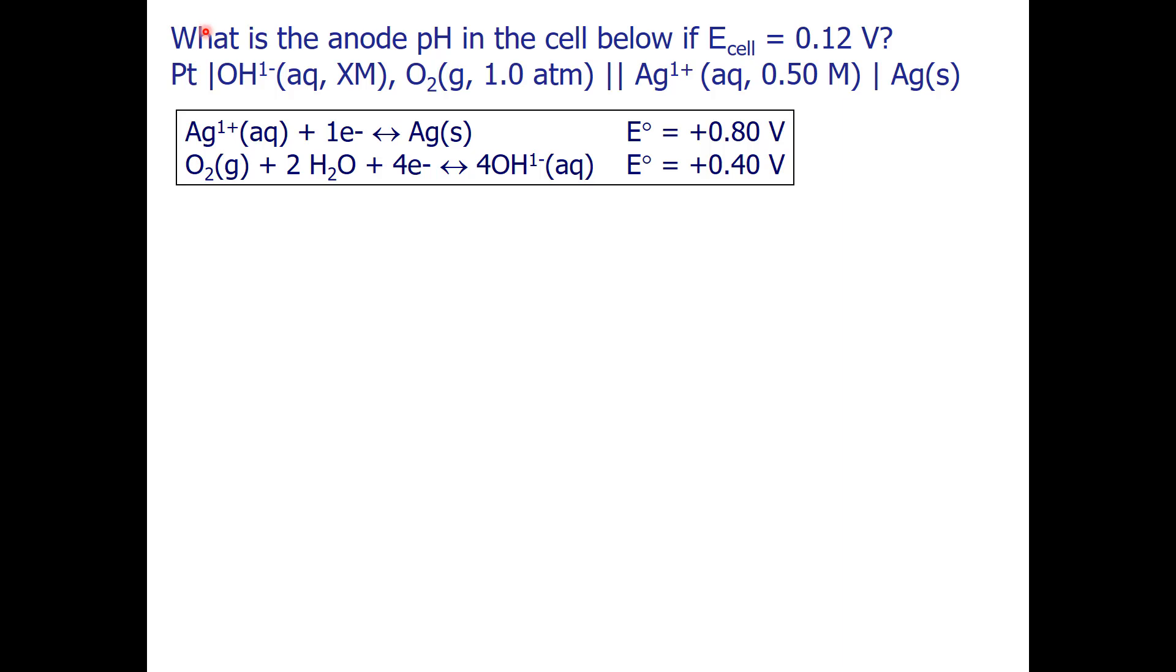This problem asks, what is the anode pH in the cell below if E-cell at non-standard state is 0.12 volts? We are given a cell setup here and the pertinent reduction reactions.